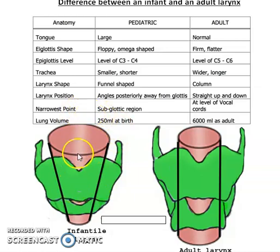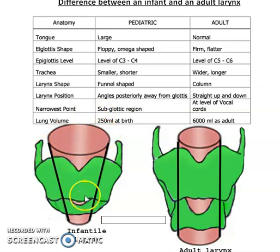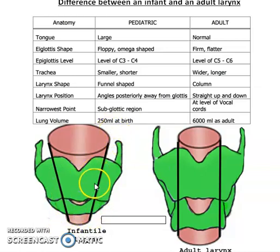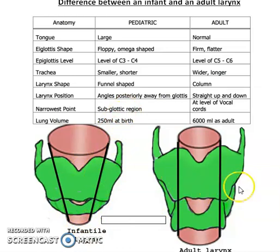The narrowest point: there are three areas in the larynx — the supraglottic area above the vocal cord, the glottic area at the level of the vocal cord, and the infraglottic area below the vocal cord. The subglottic or infraglottic area is the narrowest part in infants, while in adults the glottic area where the vocal cords are located is the narrowest.